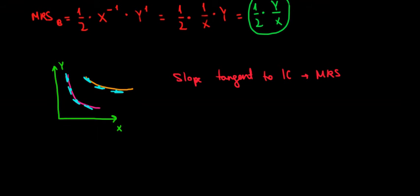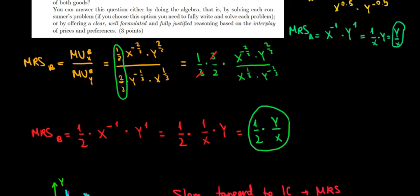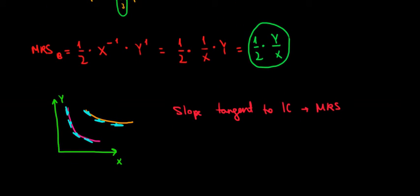Now what we can see is that the MRS of consumer A is Y over X. So let's write it over here. MRS of consumer A is equal to Y over X, but MRS of consumer B is equal to 1 over 2 times Y over X. What does this mean?